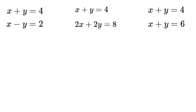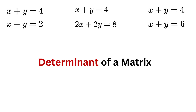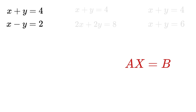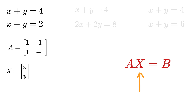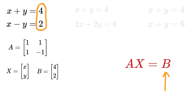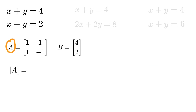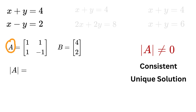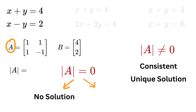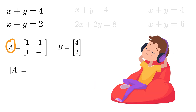Now, how can we find this systematically? The answer lies in the determinant of the matrix. If we convert the equations into matrix form A·x = b, then A is the coefficient matrix, x is the variable column, and b is the constants column. The determinant of A tells us everything: if the determinant is not zero, the system is consistent with exactly one solution. If the determinant is zero, the equations are either parallel (no solution) or the same line (infinitely many solutions).